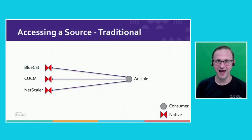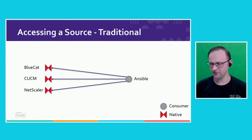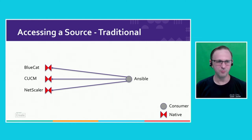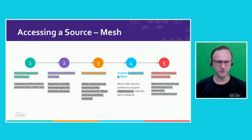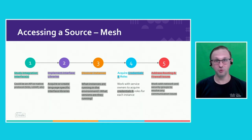Let's take a look at the difference between accessing a source traditionally versus through the mesh. In the traditional case, our Ansible playbook is reaching out to BlueCat, CUCM, and NetScaler directly. Going through the mesh, it would go through the broker, as would our PowerShell scripts or even our web clients. Instead of going through each of those five steps to get to all the backend systems directly, we now only have to do one — we only have to acquire the roles. As long as the process which requires the data can get to the broker and is using an account with the correct roles, it can get to everything it needs on the backend.